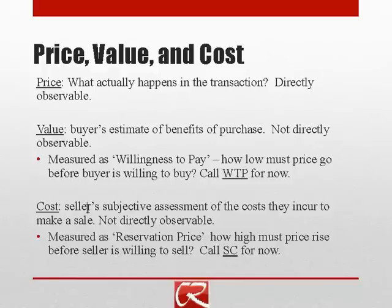Seller costs are subjective and not directly observable. How we measure that is very similar to how we use willingness to pay to measure value. We think about what's sometimes called a reservation price — how high must the price get before the seller is willing to sell? It's a kind of minimum price the seller must get. If the price is higher than the seller's reservation price, the seller is willing to sell; if lower, the seller is not willing to sell.